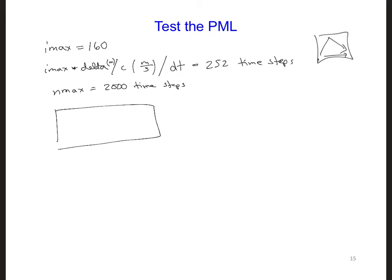So if this is our diagram, here's our transmitter, here is the PML. Then let's put an observation point right here. And it's 10 cells from the PML. So this is going to be 10 cells.